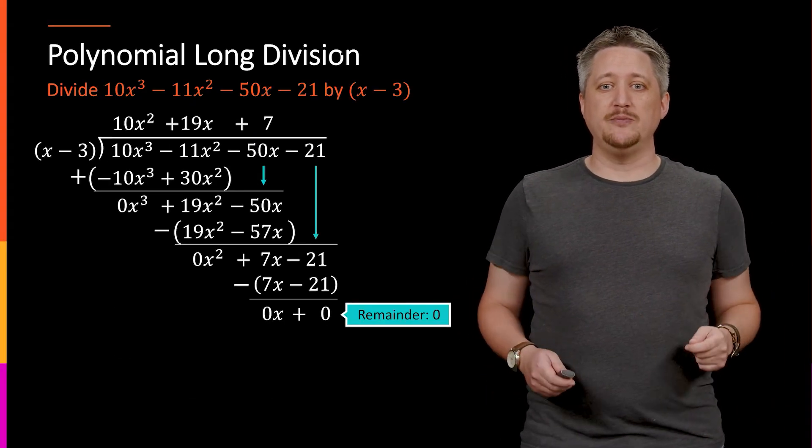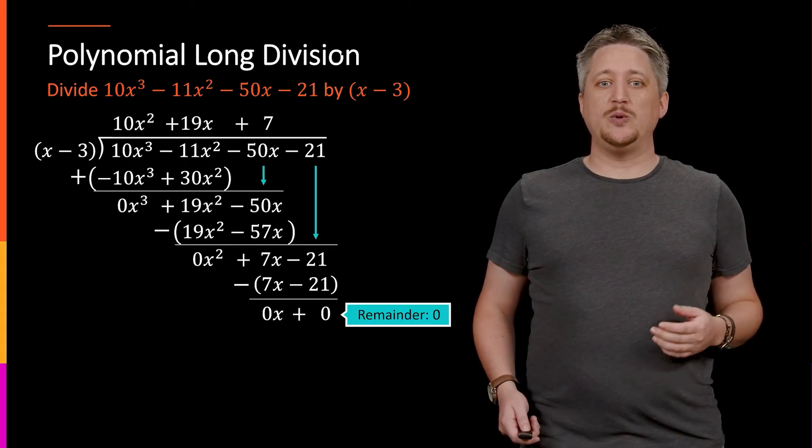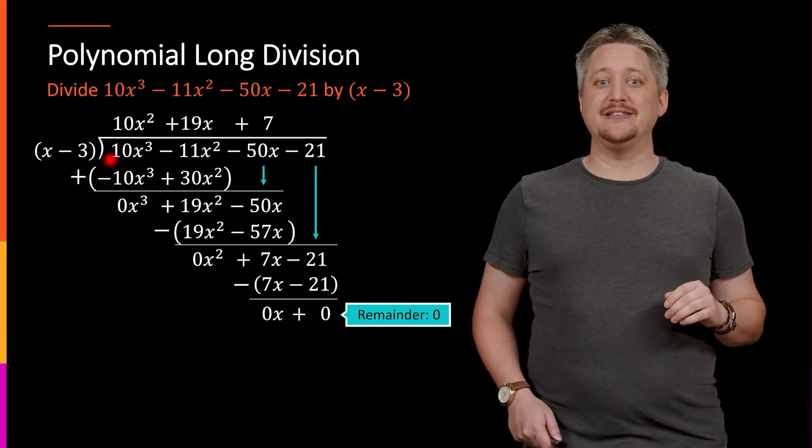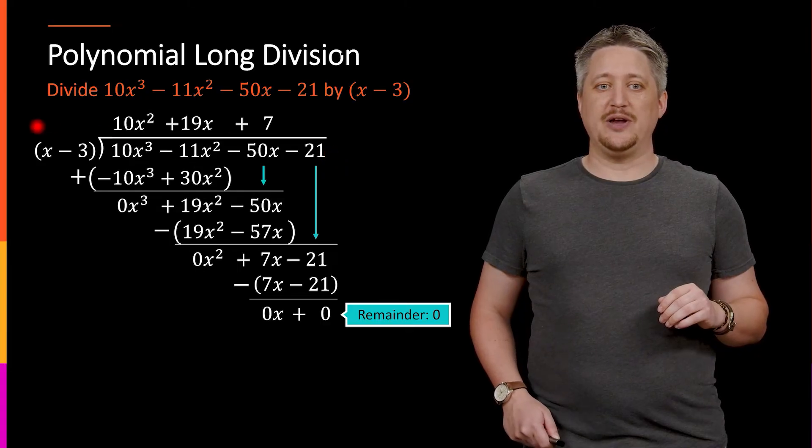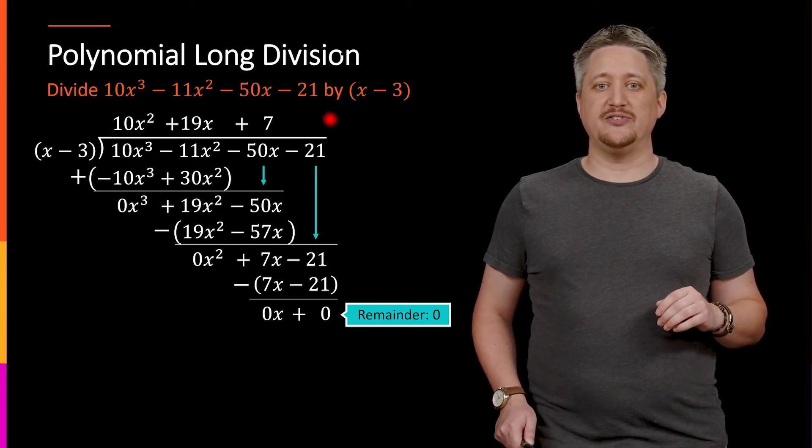So, if we look back at our polynomial, same idea here, we took the big thing that we were wanting to divide into, we have the thing we divided by, and we have the result.